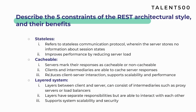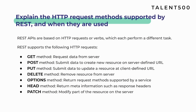Now let's move on to the next question: explain the HTTP request methods supported by REST and when they are used. REST APIs are based on HTTP requests, and each of these request methods or verbs have different tasks. The first is the GET method, which is used to request data from the server. The second is the POST method, which is used to submit data to create a new resource on a server-defined URL.